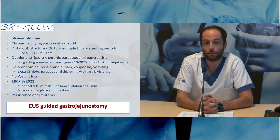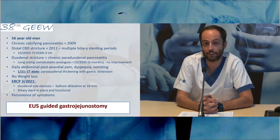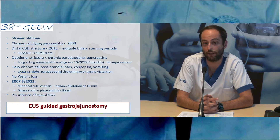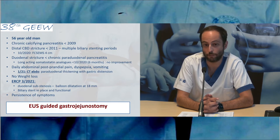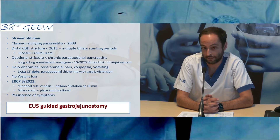He has daily abdominal postprandial pain with dyspepsia and vomiting. The last CT scan in January showed paraduodenal thickening with gastric distension but also cavernoma. There is no weight loss, and this was confirmed by ERCP in March where balloon dilation was used to pass the duodenal substenosis, but with persistent symptoms.